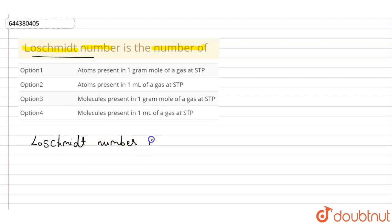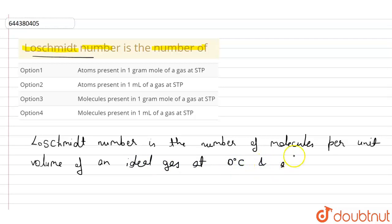The Loschmidt number is the number of molecules per unit volume of an ideal gas at zero degrees Celsius and a pressure of one atmosphere, that is one atm, and its value for one cubic centimeter is about 2.7 into 10 to the power 19.